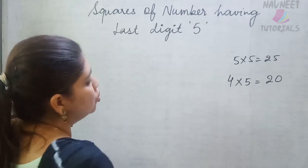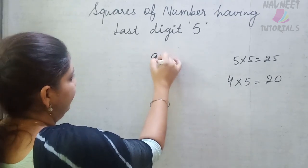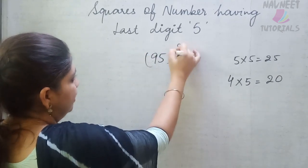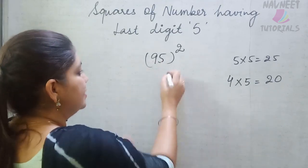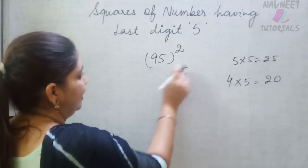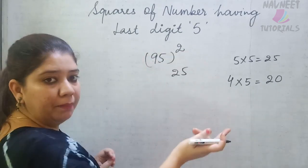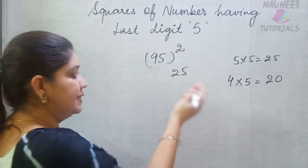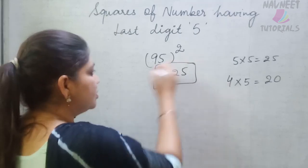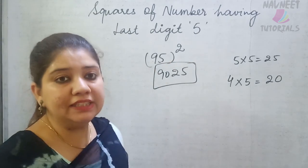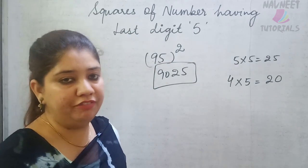Let us choose one more random number: 95 squared. Last two digits are 25. The remaining digit is 9, and the next number is 10. So 9 times 10 is 90. Write 90 at the front, giving 9025. Almost like within 3 seconds you can find it.